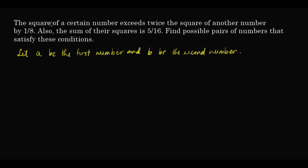From the first statement: the square of a certain number — that's a squared — exceeds twice the square of another number by 1 over 8. That means a squared is higher than twice the square of b, which is 2b squared, by 1 over 8. So if we subtract: a squared minus 2b squared equals 1 over 8. This is our first equation.